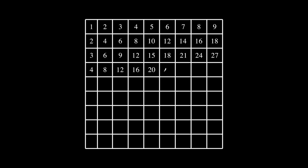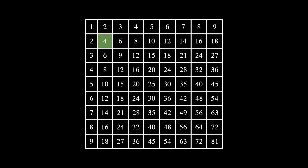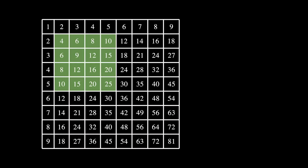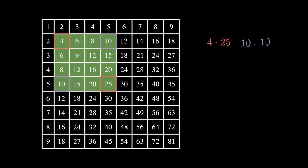Let's start off by considering smaller squares inside our table. It turns out that the products of diagonal elements are equal, regardless of the size and position.